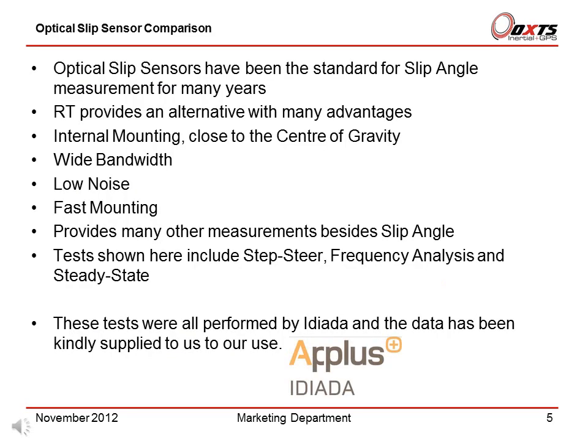Now let's look at the optical slip sensor comparison. Optical slip sensors have been the standard for slip angle measurement for many years. The RT provides an alternative with many advantages: for example, internal mounting close to the centre of gravity, a wide bandwidth, low noise, fast mounting, and it provides many other measurements besides slip angle.